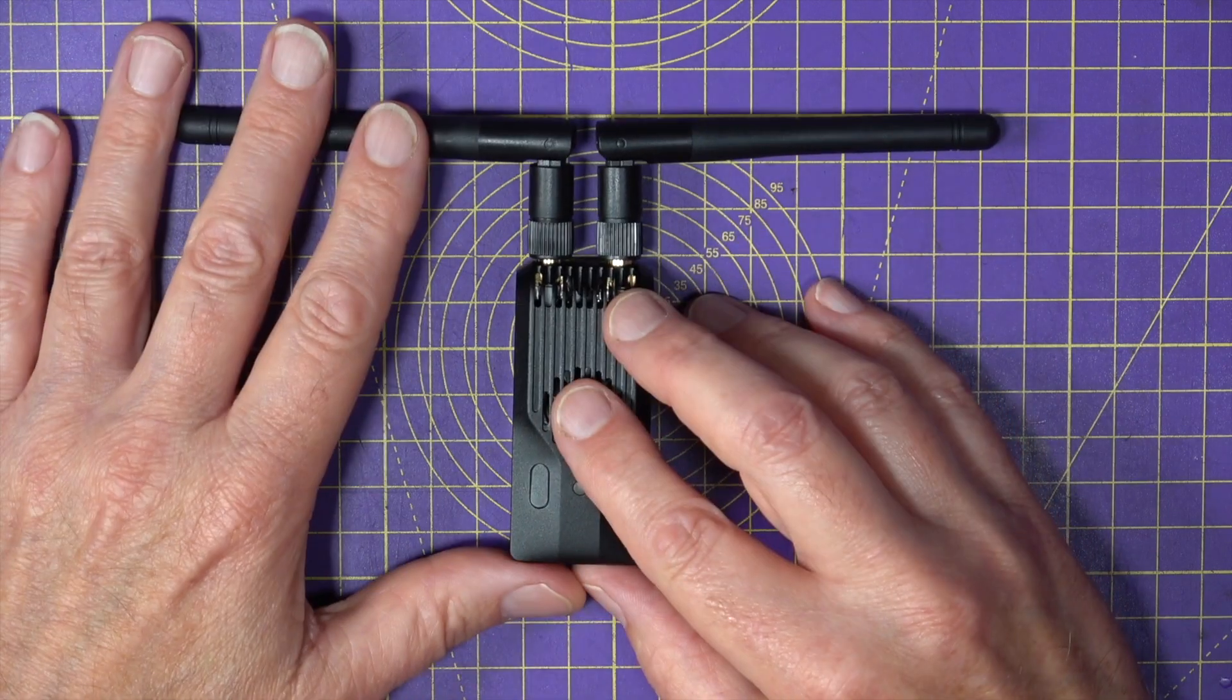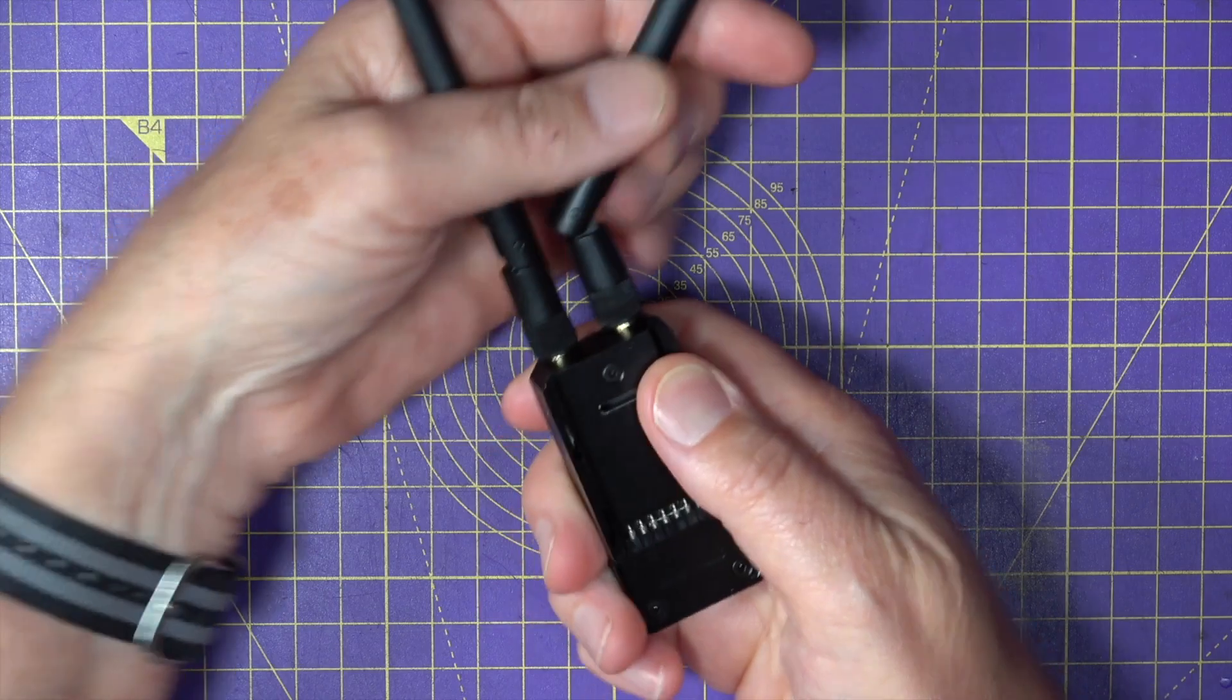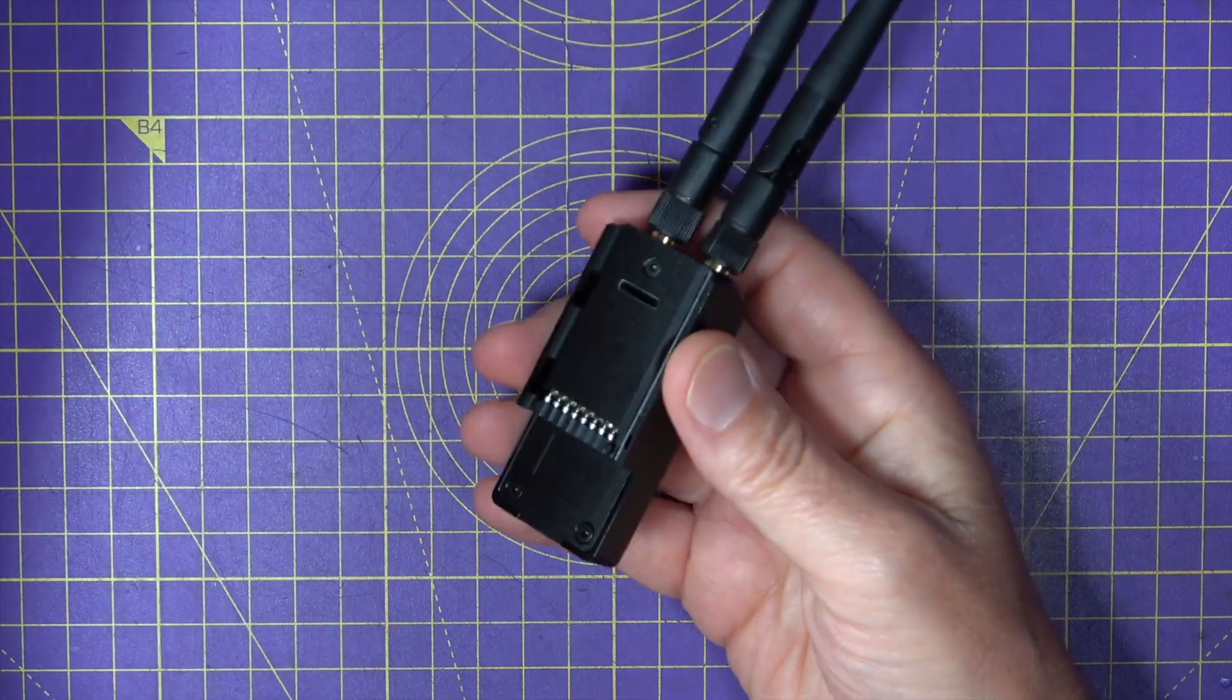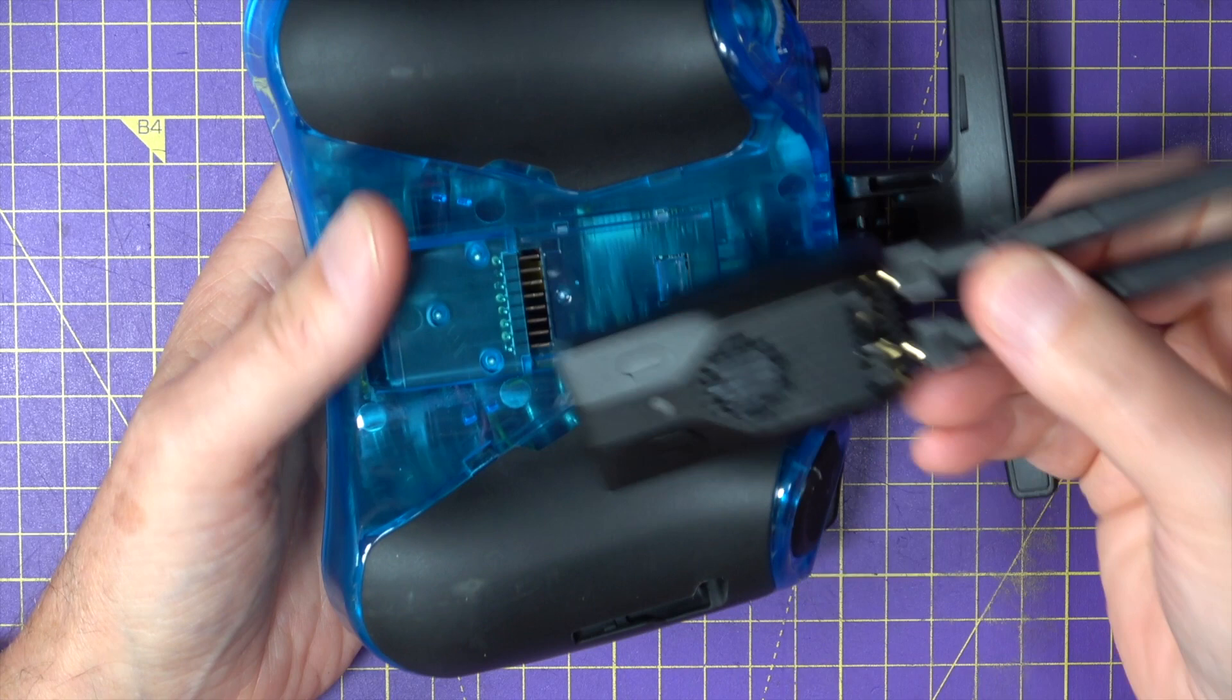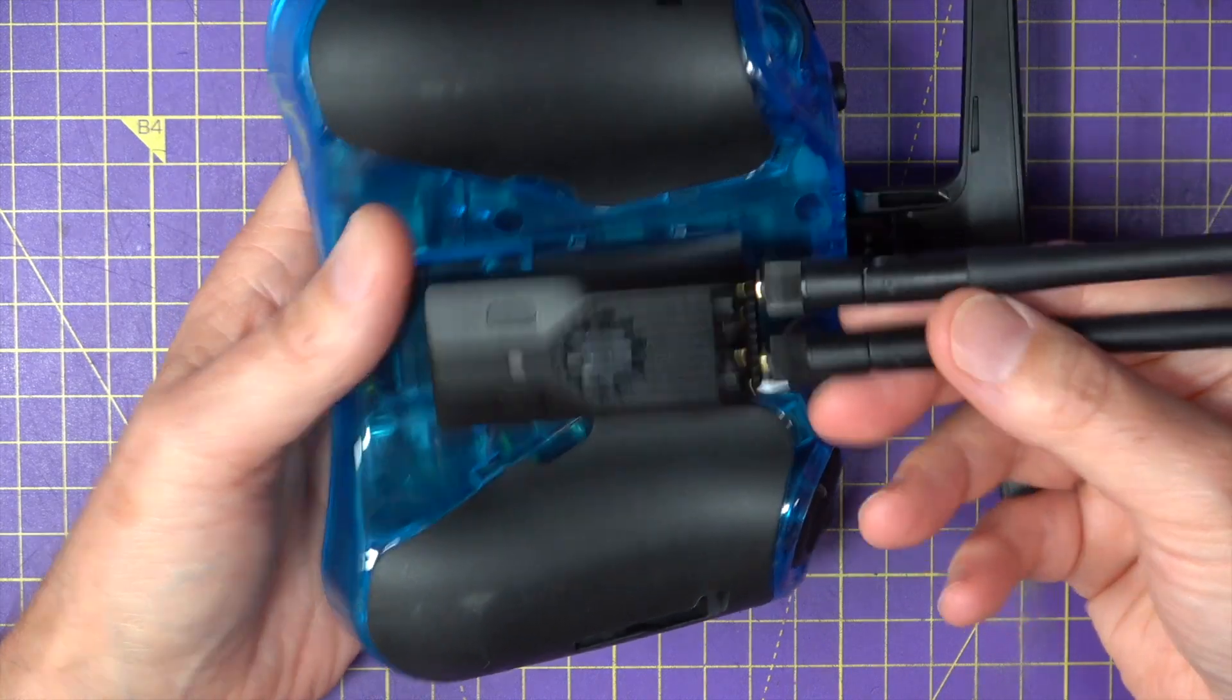Basically, it's a 1 Watt Nano module so it will simply plug into the back of something like a RadioMaster Zorro or a pocket, that's a Nano connector there, basically any radio that's got a Nano style connector.